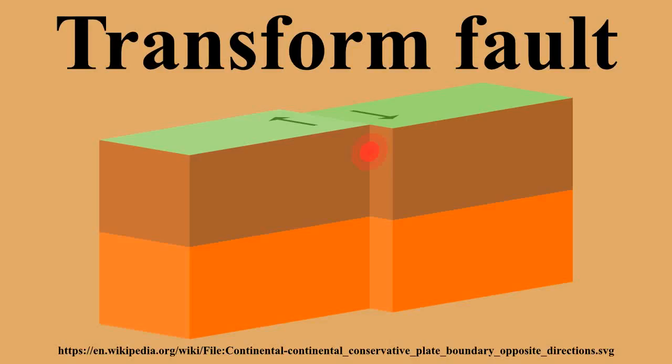Slip along transform faults does not increase the distance between the ridges it separates; the distance remains constant in earthquakes because the ridges are spreading centers. This hypothesis was confirmed in a study of fault plane solutions that showed the slip on transform faults points in the opposite direction than classical interpretation would suggest.